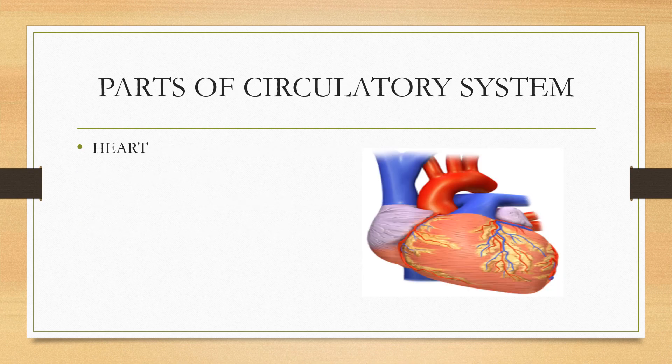The circulatory system consists of three main parts. The first is the heart. The heart is a muscular organ in most animals which pumps blood through the blood vessels. Blood provides the body with oxygen and nutrients as well as assisting in the removal of metabolic waste. In humans, the heart is located between the lungs in the middle compartment of the chest.